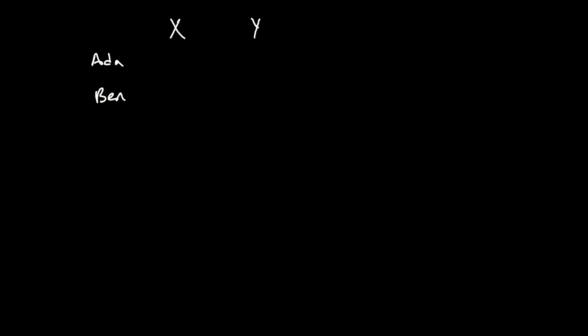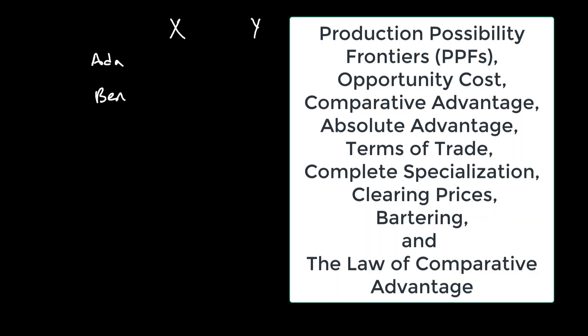Let's work through an example covering production possibility frontiers, opportunity cost, comparative advantage, absolute advantage, terms of trade, complete specialization, clearing prices, bartering, and the law of comparative advantage.